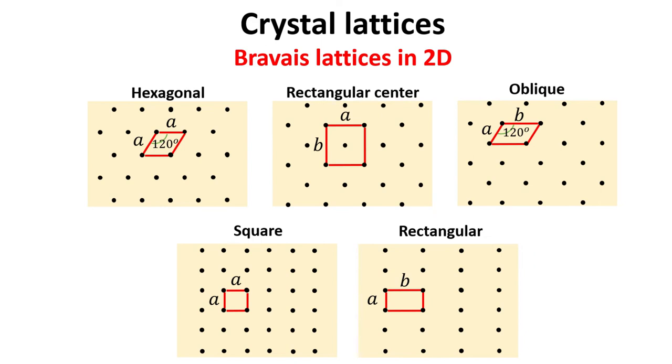Incredibly, the crystal structure of all possible two-dimensional crystals in nature are described by only these five Bravais lattices. In three dimensions, there are 15 inequivalent Bravais lattices. But in this video we focus on 2D lattice for simplicity. The generalization for 3D lattices is straightforward.